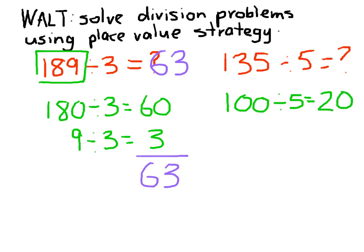100 divided by 5 is 20. That leaves the difference of 35.